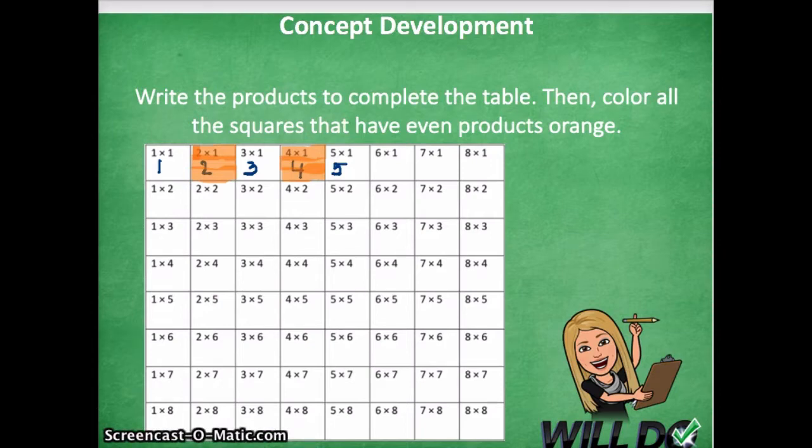Three times one equals three. I know three is an odd number, so I left that square blank. Please go through with your learning guide and solve the equations, and when you see an even number as a product, shade that box orange.